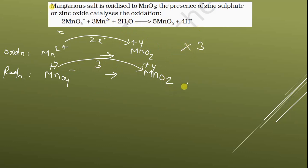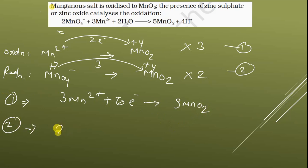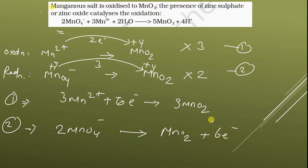In order to balance the number of electrons equally, the oxidation half equation is multiplied by three and the reduction half equation is multiplied by two. So the first equation becomes 3Mn2+ giving 3MnO2 with six electrons, and the second gives six electrons as well — the number of electrons is now balanced.